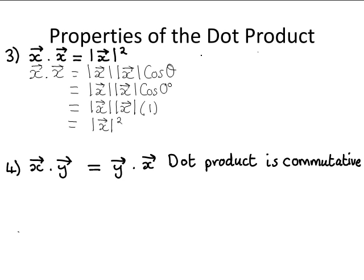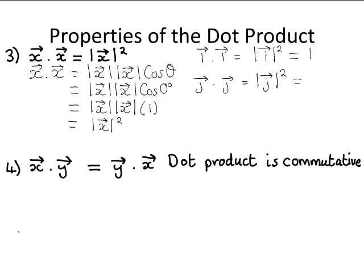This is important for the i and j vectors. The i vector dotted with the i vector is equal to the modulus of the i vector squared. The modulus of the i vector is just one, and one squared is one. Similarly, the j vector dotted with the j vector equals the modulus of the j vector squared. The modulus of the j vector is also one, as discussed previously, so one squared is equal to one.